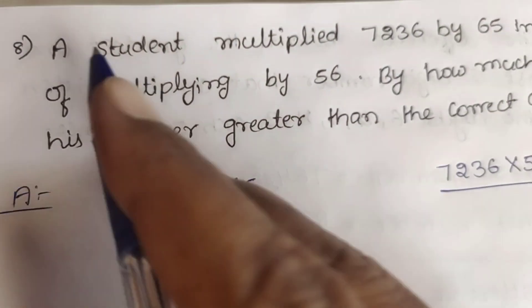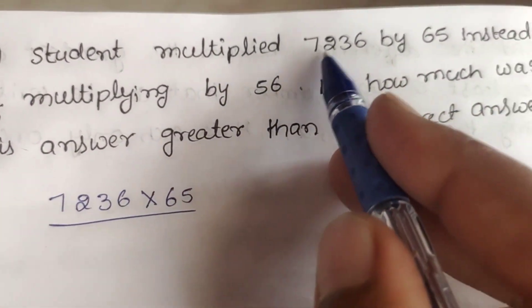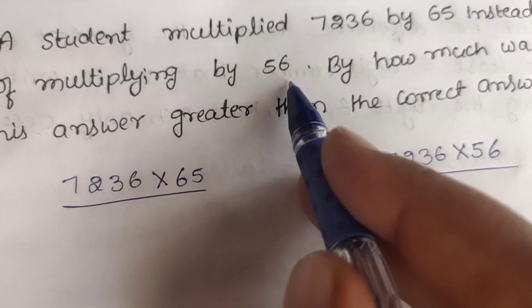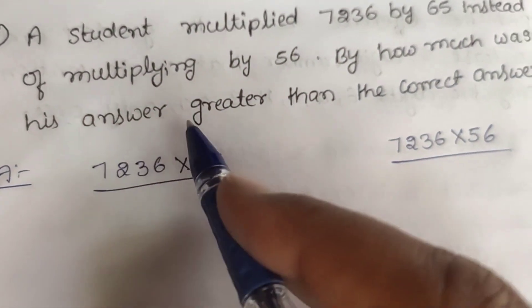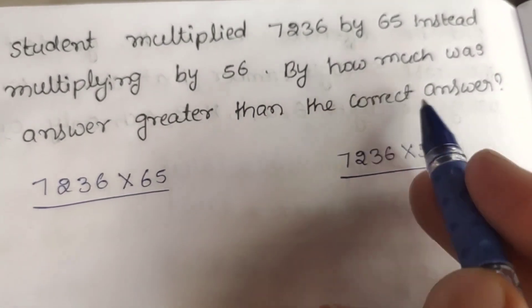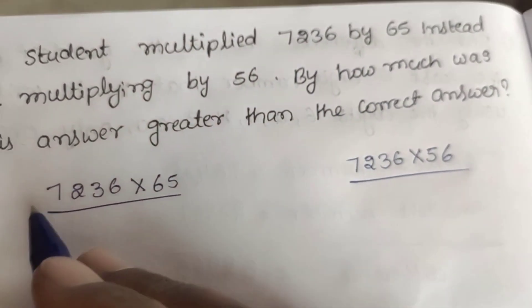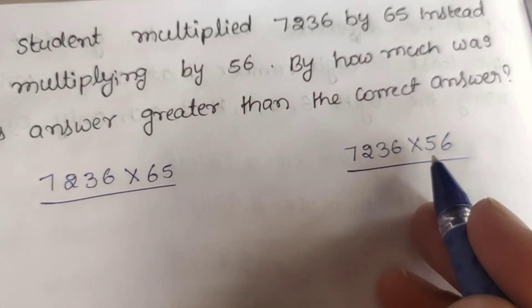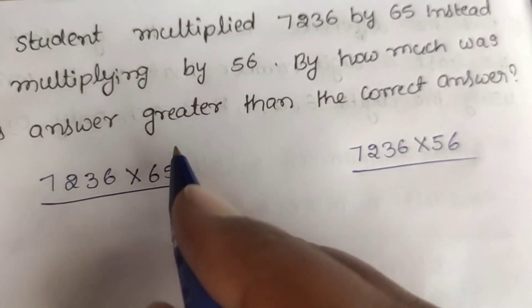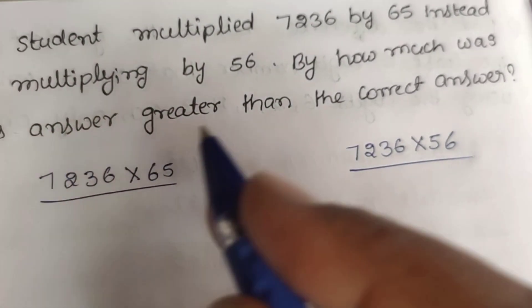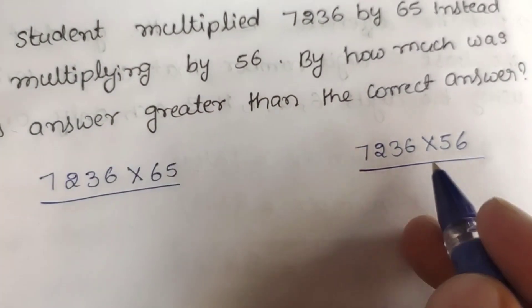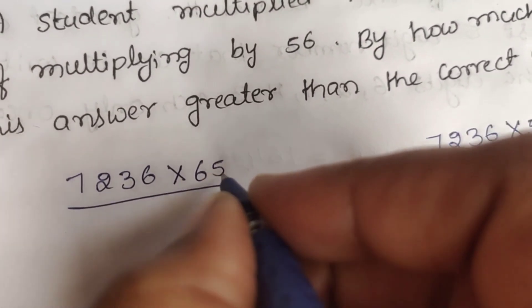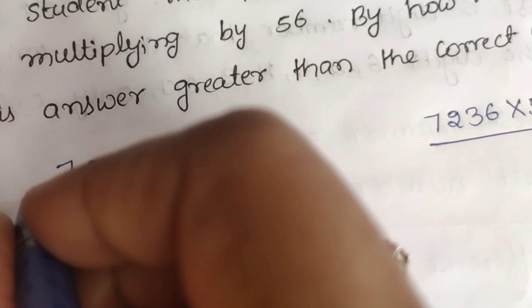Eighth question: A student multiplied 7,236 by 65 instead of multiplying by 56. By how much was his answer greater than the correct answer? So, this is the correct answer. We need to find how much greater than the correct answer. Now, we multiply by 65. First, 7,236 multiply by 65. 5×6 are 30.